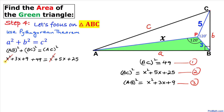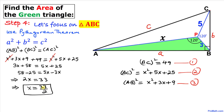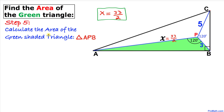The X² terms cancel on both sides. Combining like terms on the left: 3X + 58 = 5X + 25. Rearranging — moving 25 to the left and 3X to the right — gives 58 − 25 = 5X − 3X, so 33 = 2X. Therefore X = 33/2.